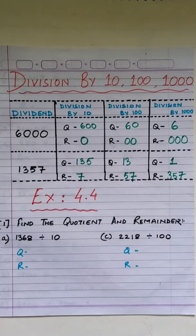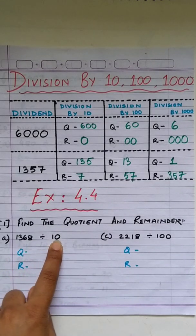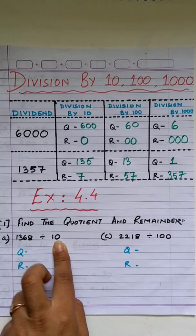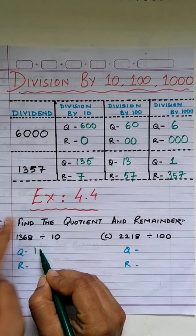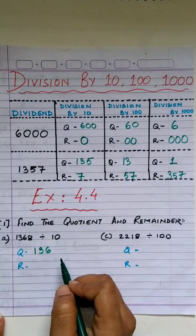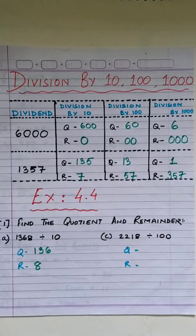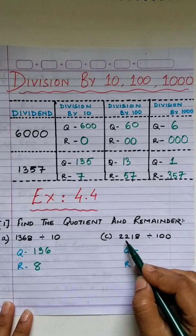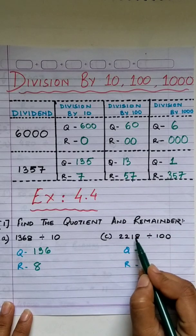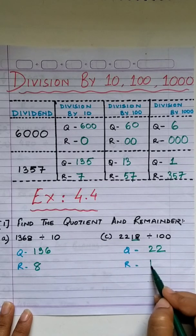Now I'm sure you can solve exercise 4.4. Let's start with the first one: 1,368 divided by 10. We hide one digit — quotient is 136 and remainder is 8. Now let's solve C1: 2,218 divided by 100. Hide the last two digits — quotient is 22 and remainder is 18.